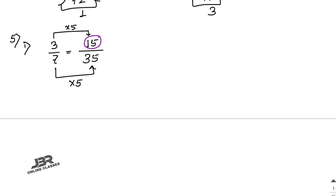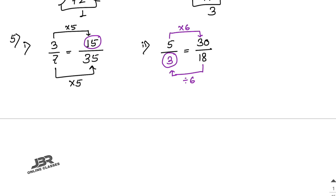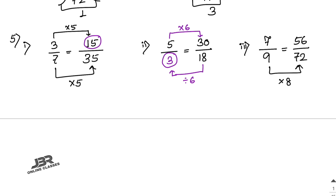Number 2: 5 by blank equals 30 by 18. Since 5 multiplied by 6 gives 30, divide 18 by 6, which equals 3. So the answer is 3. Number 3: blank by 9 equals 56 by 72. Since 9 eights are 72, multiply the numerator by 8 as well: 7 eights are 56. So the answer is 7.